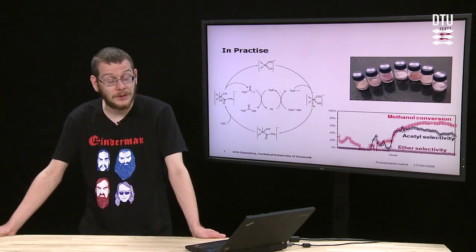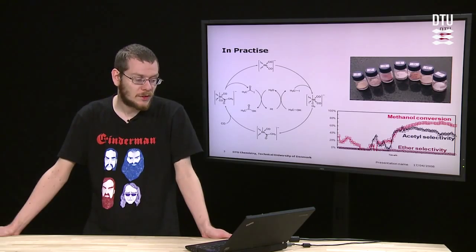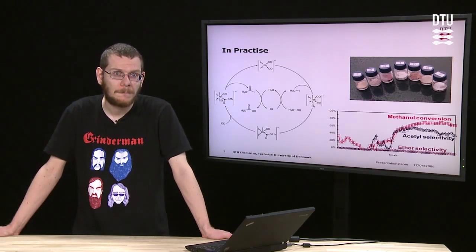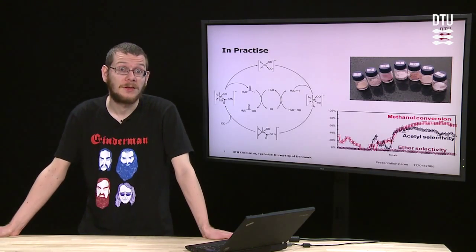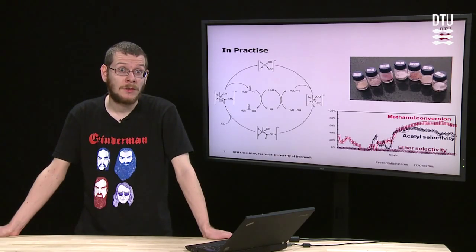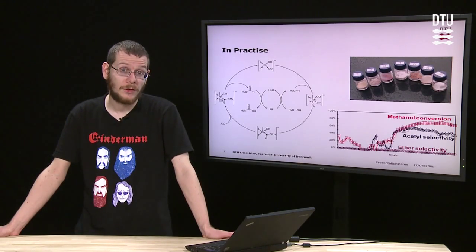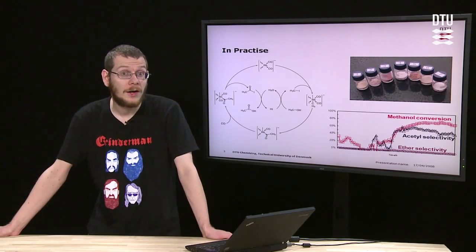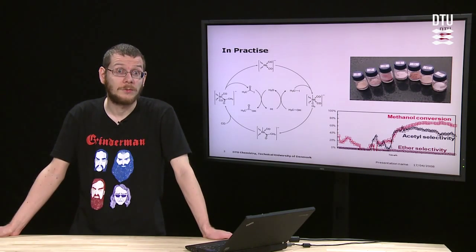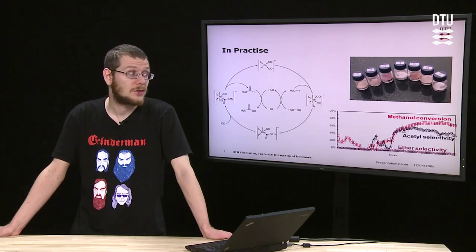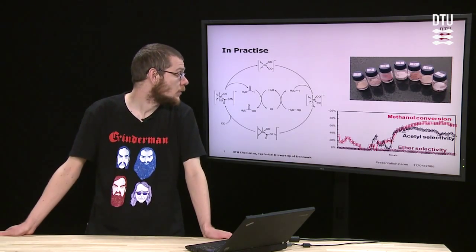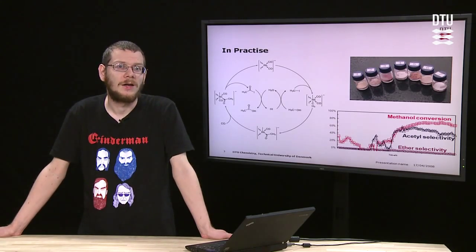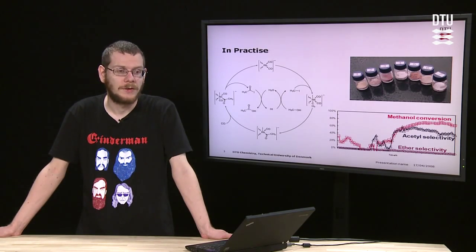And what you can see on the bottom right here gives us a rough average of some of our results. We can get conversion of methanol up to about 60%, which is not quite as high as industry, but comparable at some stages. And our acetyl selectivity, which is all our important products, is slightly lower, but is also quite a good level and almost comparable industrially.